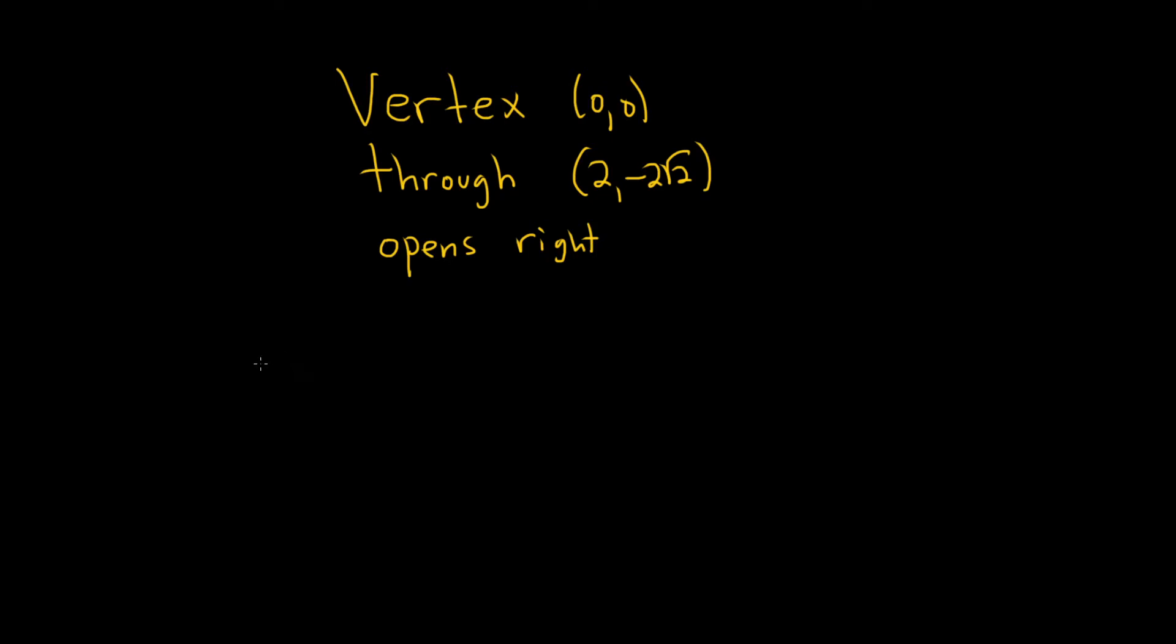In this problem, we're being asked to find the equation of a parabola. We're told various pieces of information: the vertex is (0,0), it passes through this point, and it opens right.